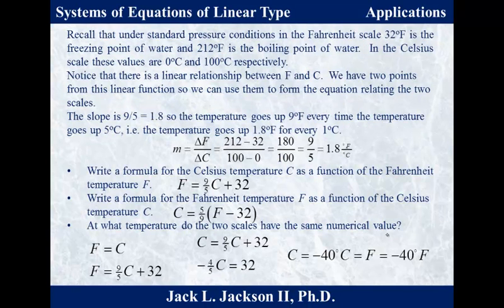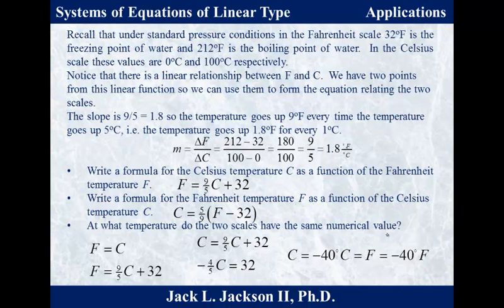The slope is computed as delta F over delta C, which is 9/5, or 1.8 degrees Fahrenheit per degree Celsius. This is constant, which makes sense and confirms a linear relationship. Another way to say it: every time you go up 5 degrees Celsius, you go up 9 degrees Fahrenheit — or every 1 degree Celsius corresponds to 1.8 degrees Fahrenheit. The size of a Fahrenheit degree is 1.8 times that of a Celsius degree.